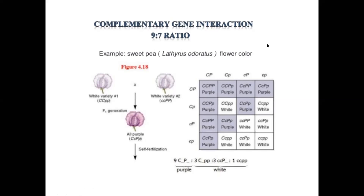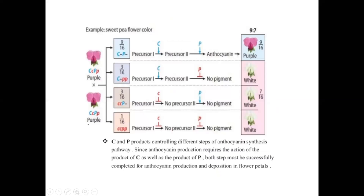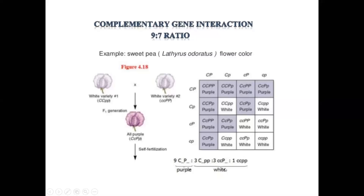Explaining the complementary gene action further: when purple color is crossed again, in the next generation we also get the same ratio. From the checkerboard cross using each gene variety, we can see that there are 9 varieties of purple and 7 white flowers produced. This phenomenon, where gene action is suppressed in certain combinations, is known as complementary gene action with a 9:7 ratio.